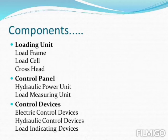Let us look at the components of a universal testing machine. It contains the loading unit, which has a load frame, a load cell, and a crosshead. It also has a control panel, a hydraulic power unit, and a load measuring unit.